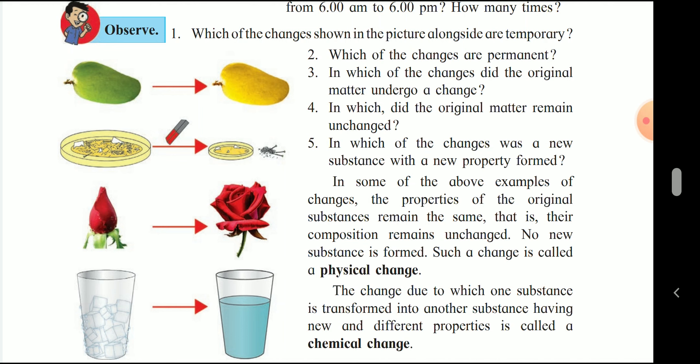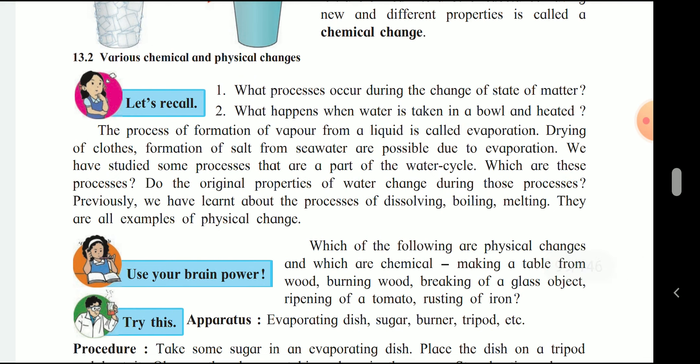The process of forming vapor from liquid is called evaporation. Drying of clothes and forming of salt from sea water are possible due to evaporation. We have studied some processes that are part of the water cycle. The original property of water does not change due to those processes. Previously we have learned about the processes of dissolving, boiling, and melting — they are all examples of physical changes. The process of forming water vapor is formed after evaporation.